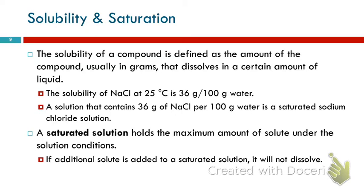Solubility can be quantified. It's the amount of the compound, usually measured in grams, that will dissolve in a certain amount of liquid — often 100 grams of liquid. The solubility of sodium chloride at room temperature is 36 grams per 100 grams of water. So if you have 100 grams of water, you could add 36 grams of sodium chloride, stir it, and if you wait long enough, it will dissolve. That's considered a saturated solution because the water is full of sodium chloride — it can't hold anymore.